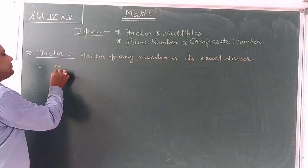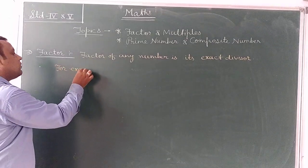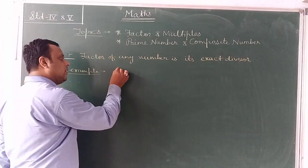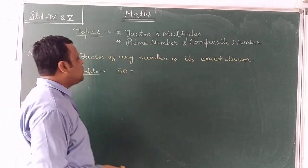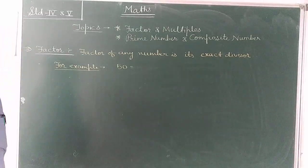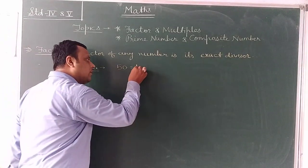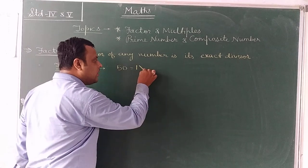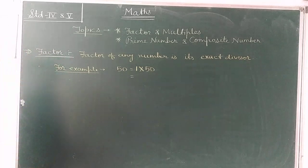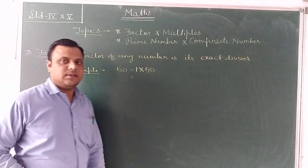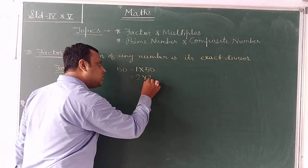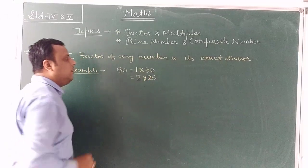For example, I am taking the number 50. First of all, we have to write the smallest factor of this number. It is 1. So we write 1 multiplied by 50 equals 50. Now we think about the second factor of this number. That is 2. So we can write 2 multiplied by 25, because 25 times 2 equals 50.